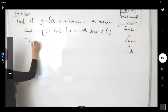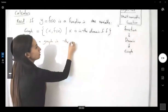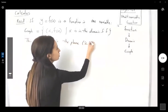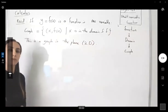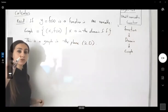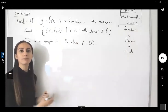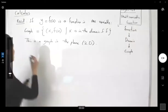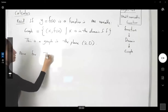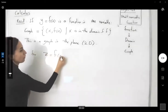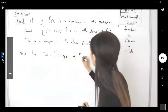This is a graph in the plane for two dimensions. If I add a new variable and define a function in two variables, I'm actually using all of those triples to visualize the function. For z equals f of x and y — a function in two variables.